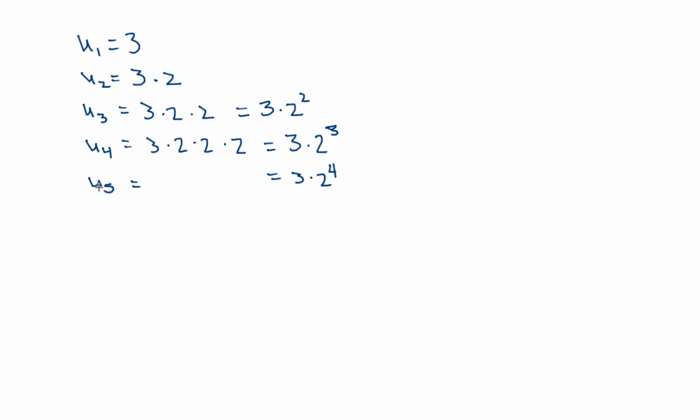Now, if I notice, there's a pattern going on here, a 5 and a 4, one less. A 4, my fourth term, exponent 3, one less. So, U6 then is going to be 3 times 2, one less, to the power of 5.